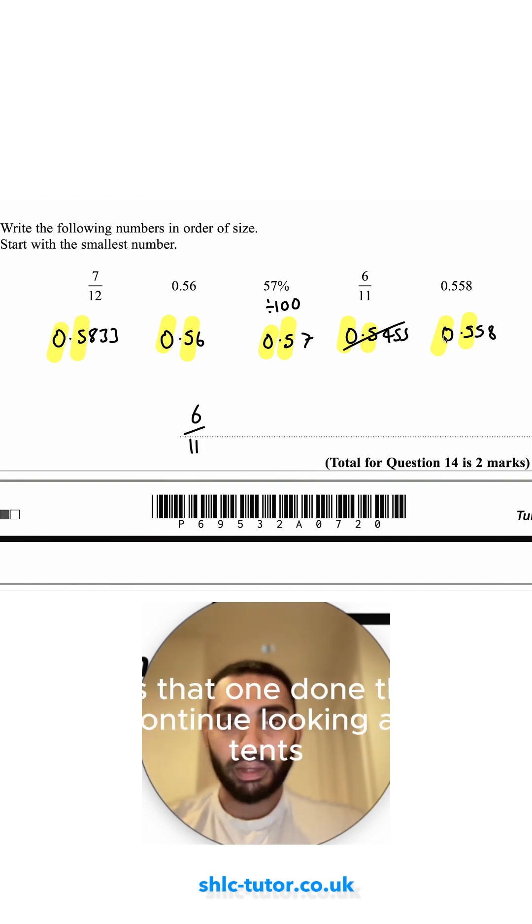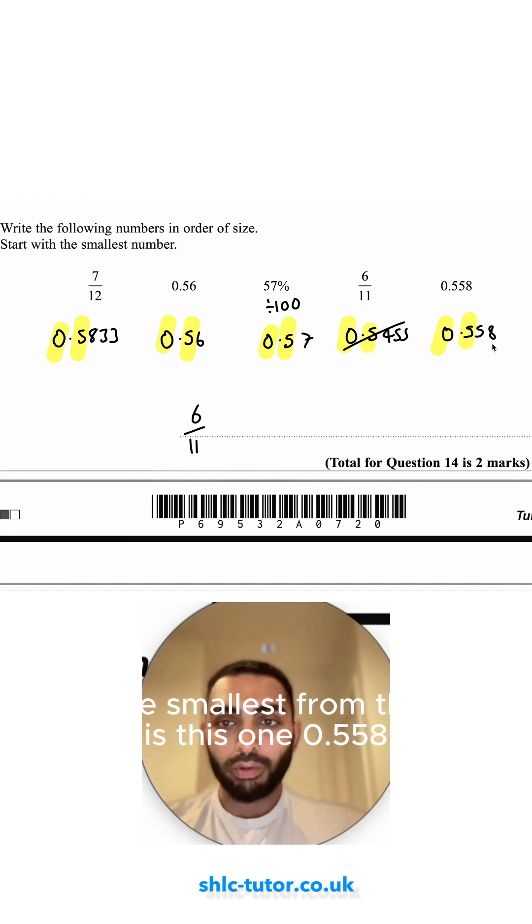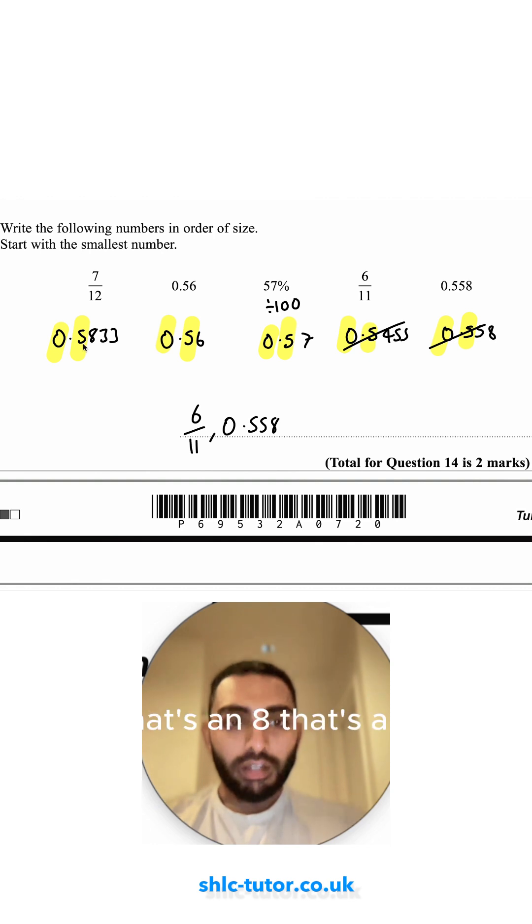Then I can continue looking at the hundredths. I do the same thing again. That's an eight, that's a six, that's the smallest so far. Seven and five, so the smallest from those is this one, zero point five five eight. That's an eight, that's a six, that's a seven. So smallest out of those is the six, so zero point five six.